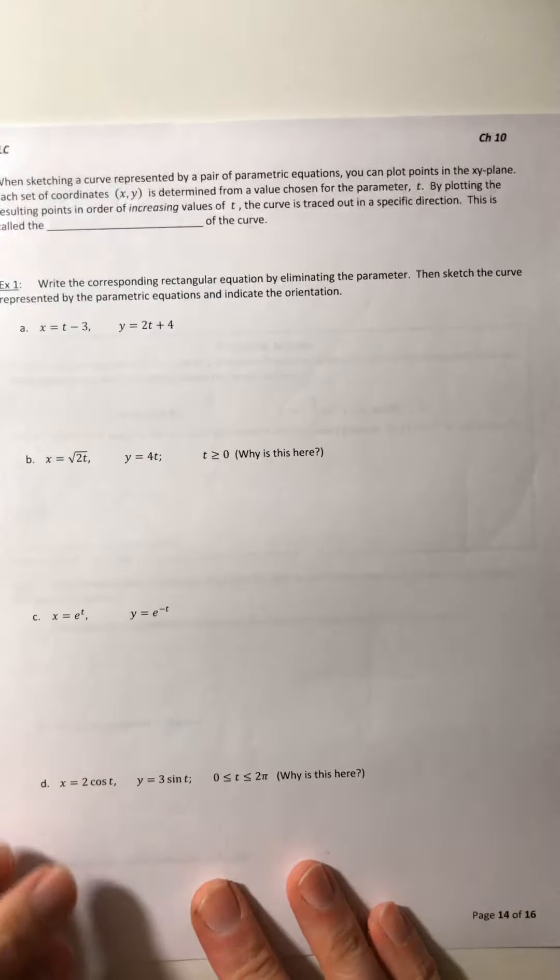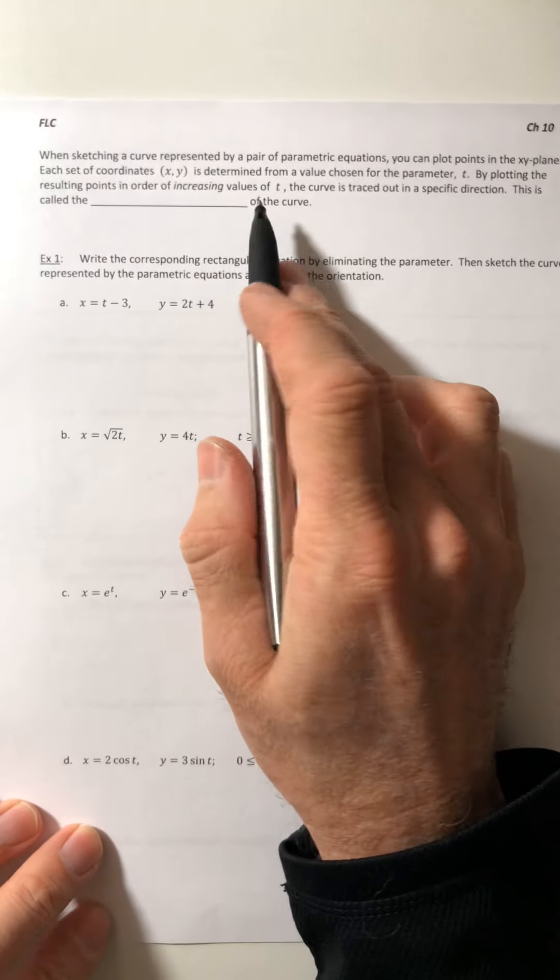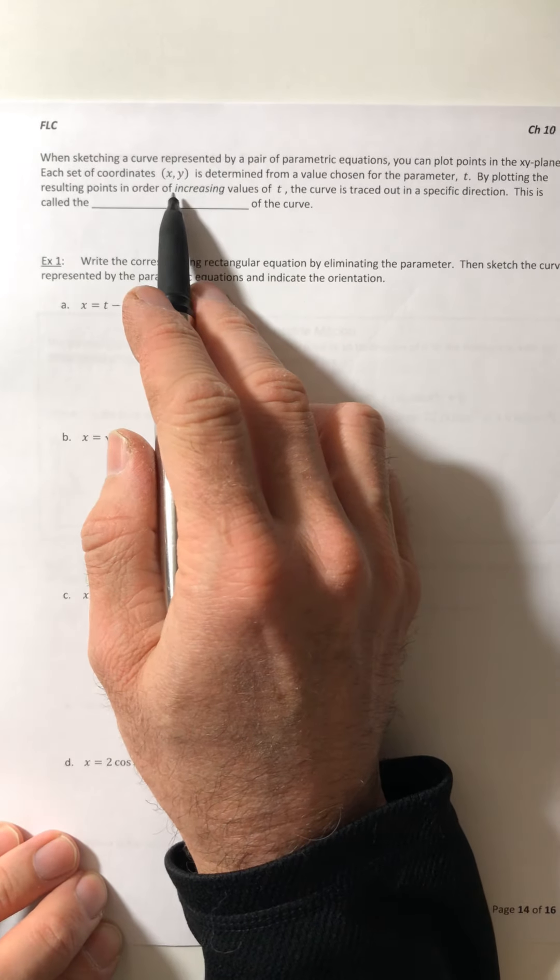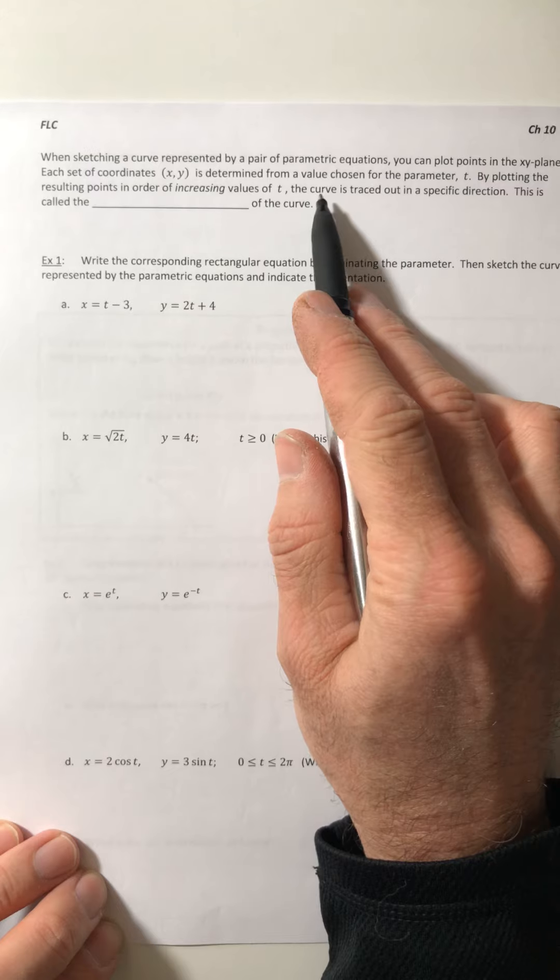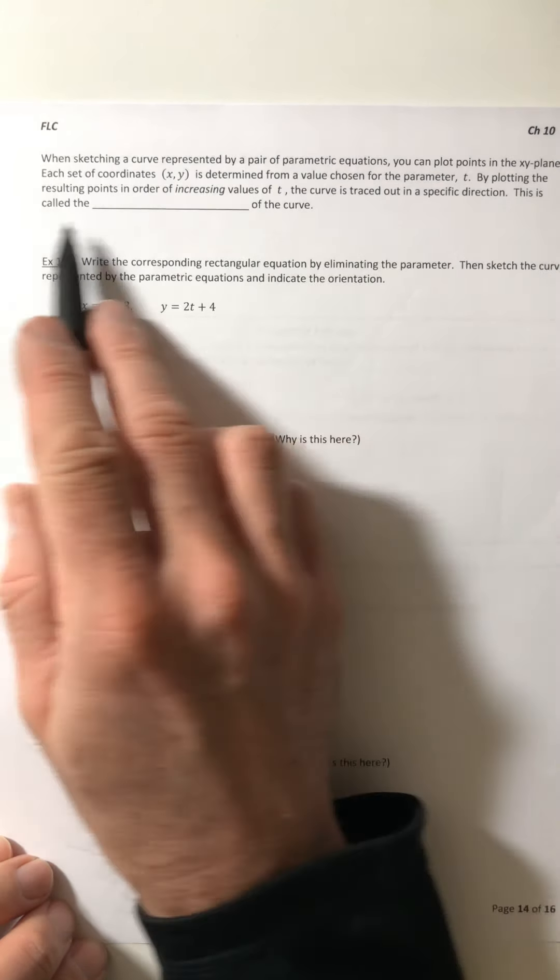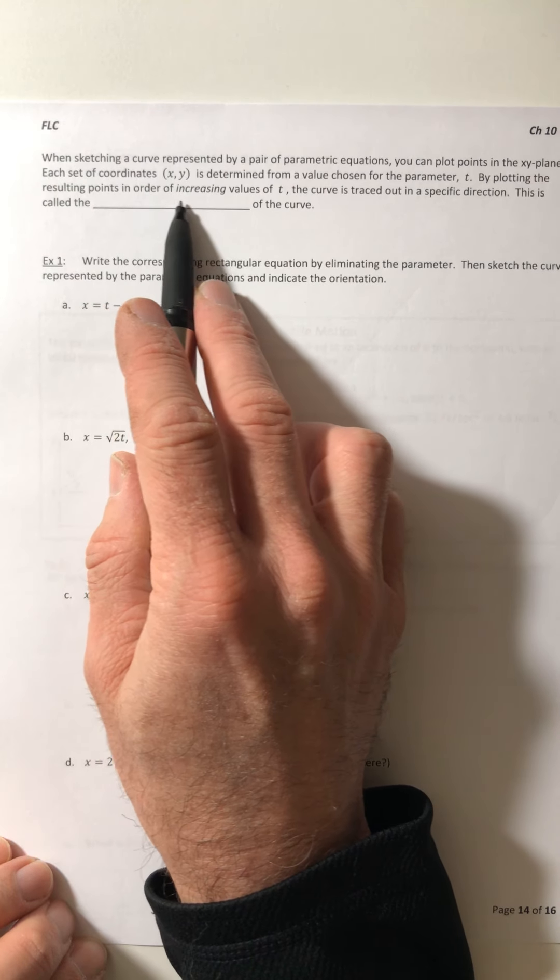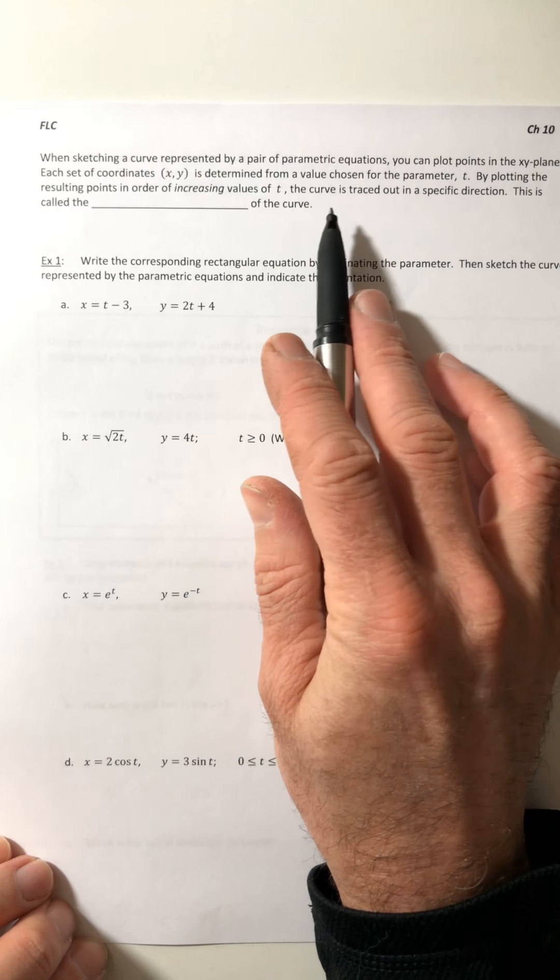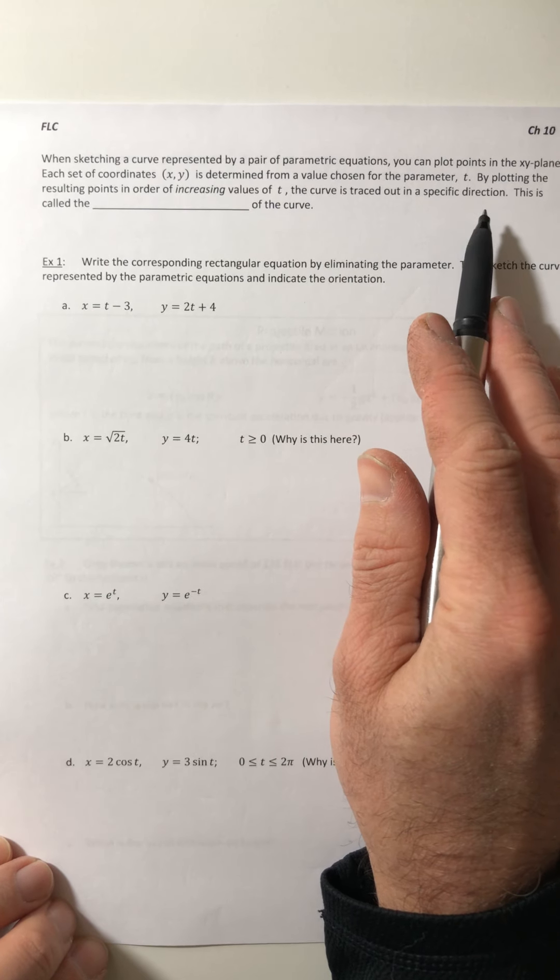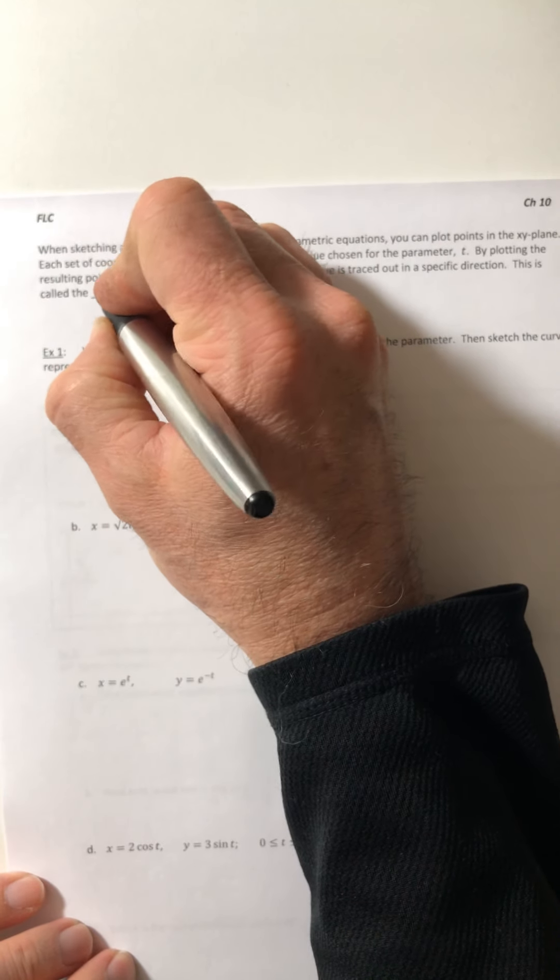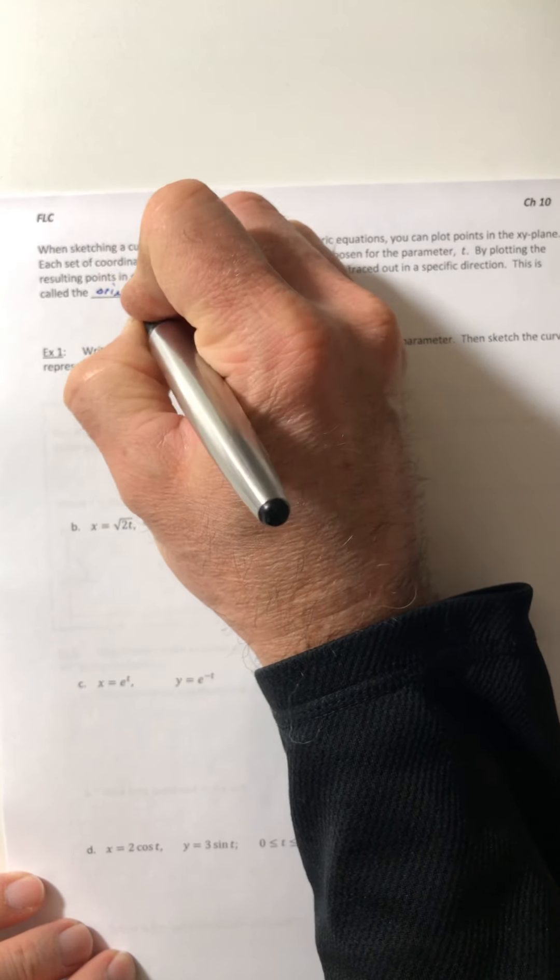When sketching a curve represented by a pair of parametric equations, you can plot points in the x, y plane. Each of the coordinates is determined from a value chosen for the parameter t. By plotting the resulting points in order of increasing values of t, so as time marches on, the curve is traced out in a specific direction. This is called the orientation of the curve.